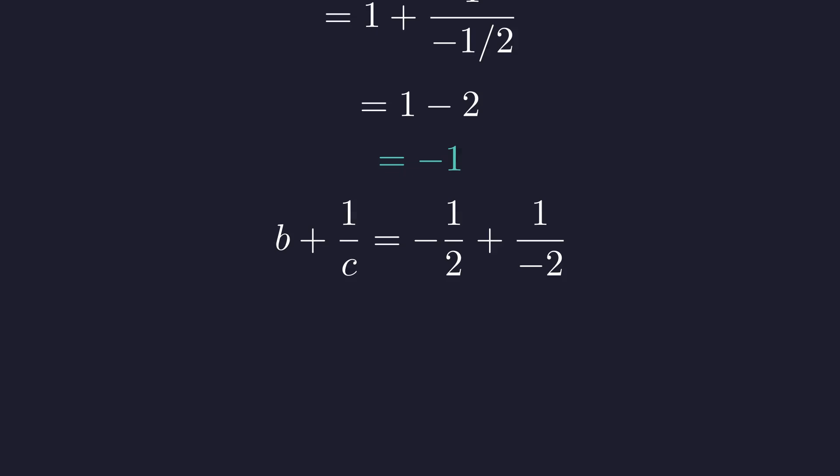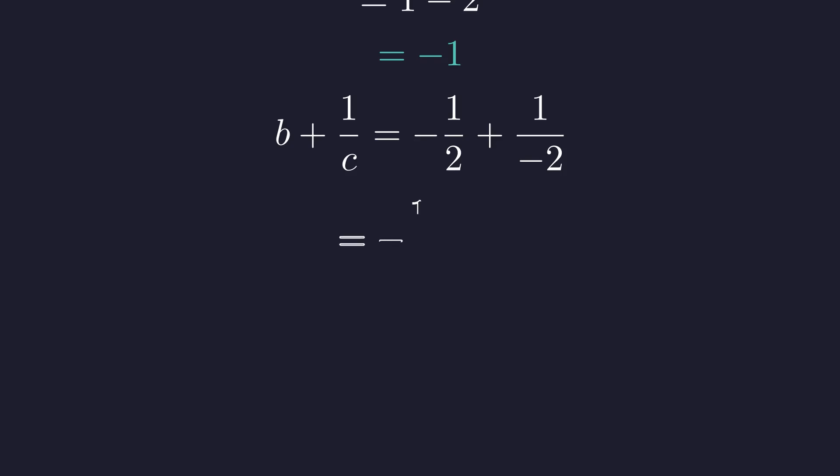Next, for B plus 1 over C, we substitute to get negative 1 half plus 1 over negative 2, which is negative 1 half minus 1 half. This also equals negative 1. The second expression matches.